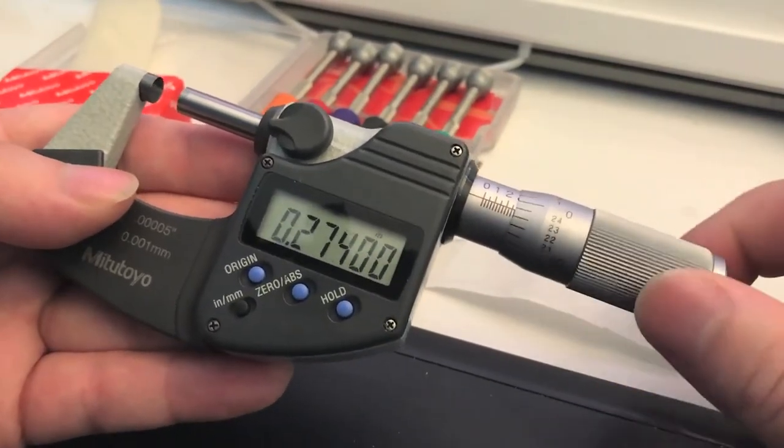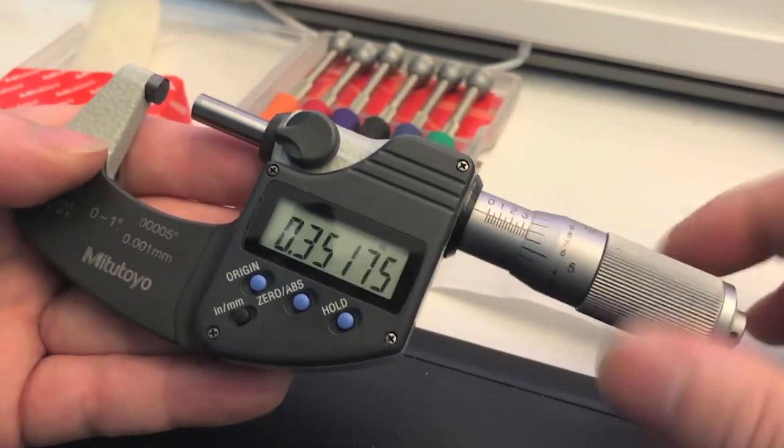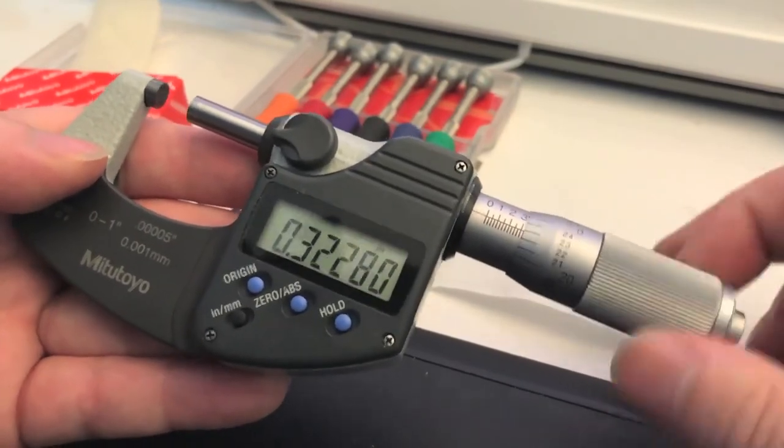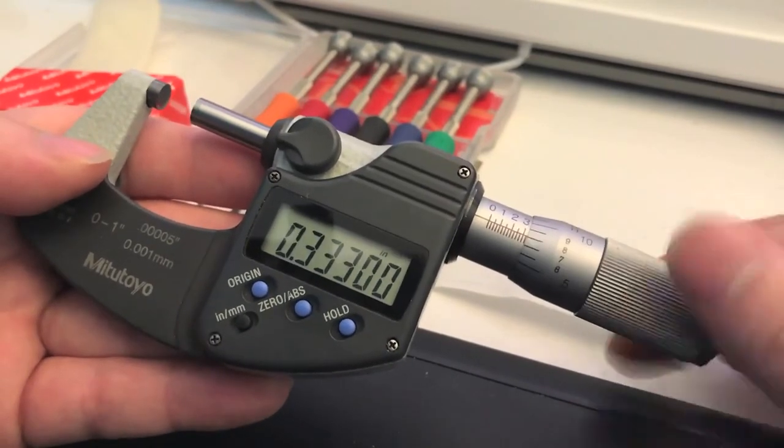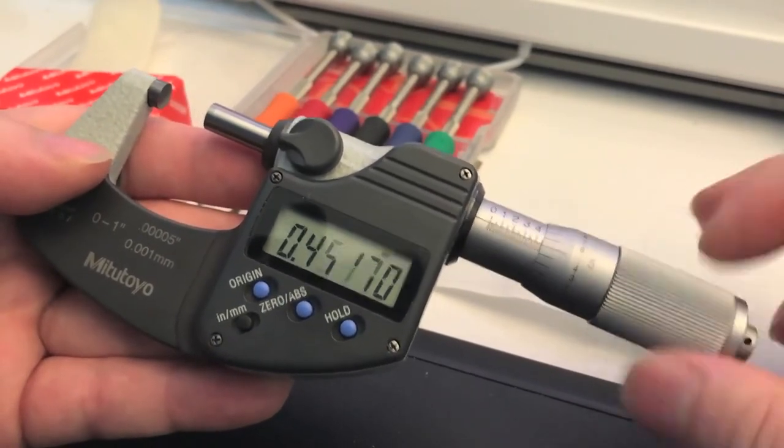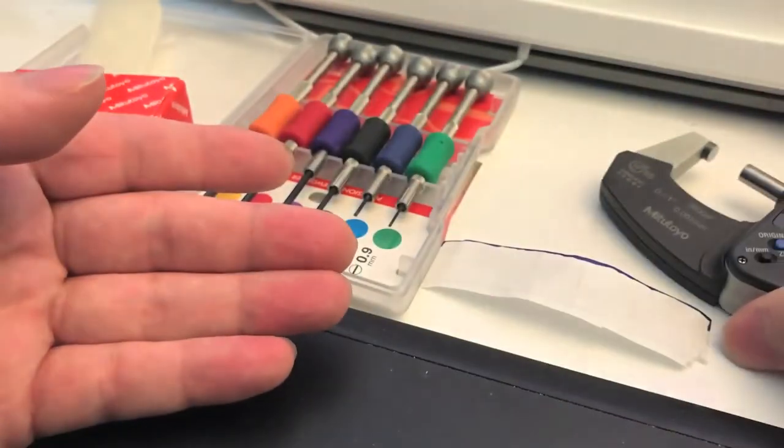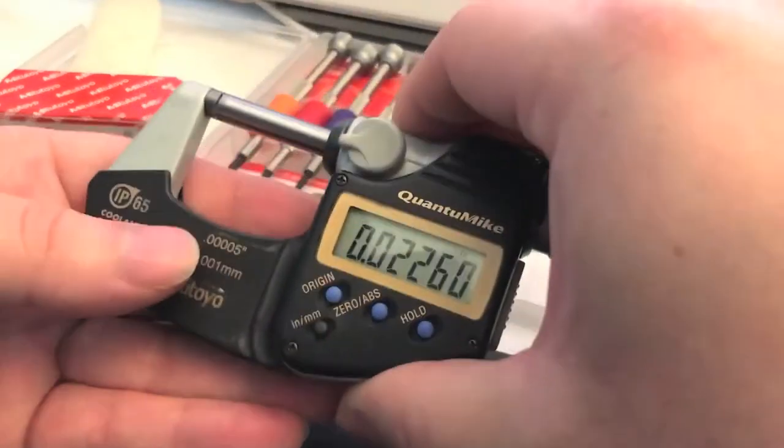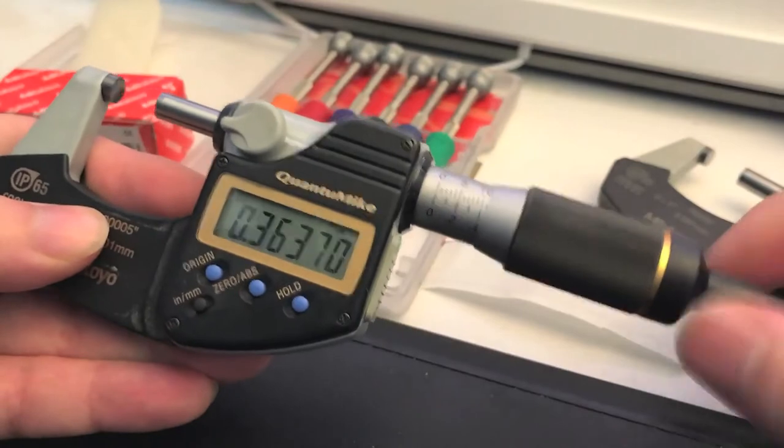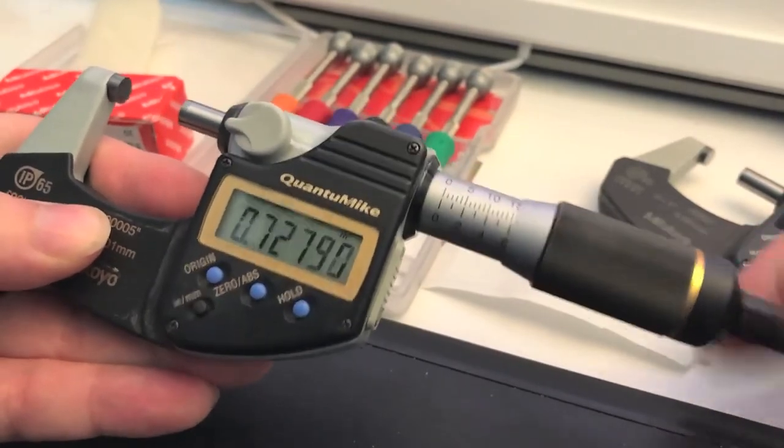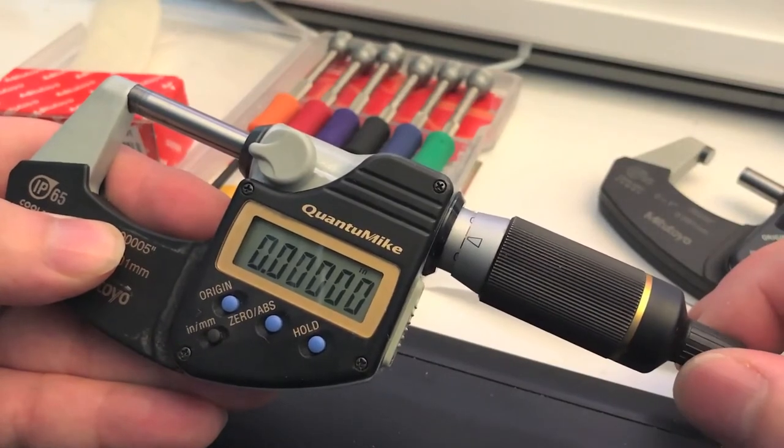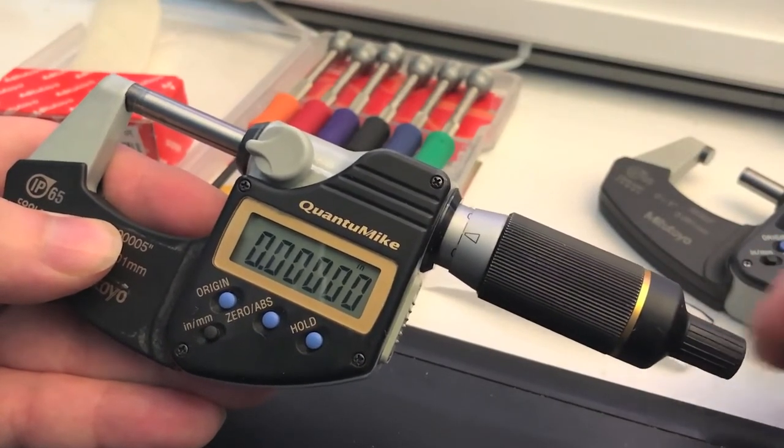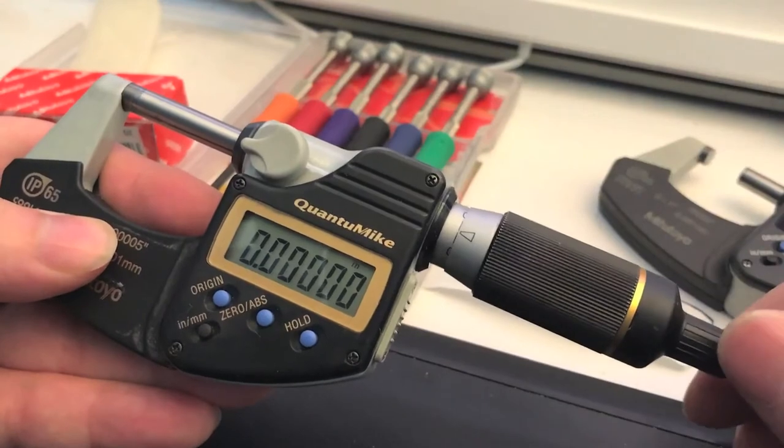Quick comparison between the standard Mitutoyo 0-1 inch mic here. You can see the spindle going nice and slow. Very, very slow, very deliberate, very smooth, as all Mitutoyo instruments are. But compare that with the Quantum mic, which is much faster, and just as accurate as the other mic, but you really have to sneak up there on that anvil before you go slamming it into the anvil.